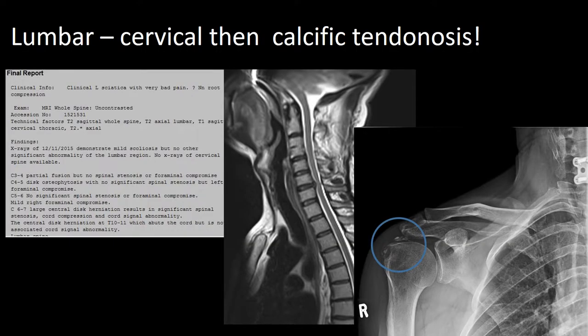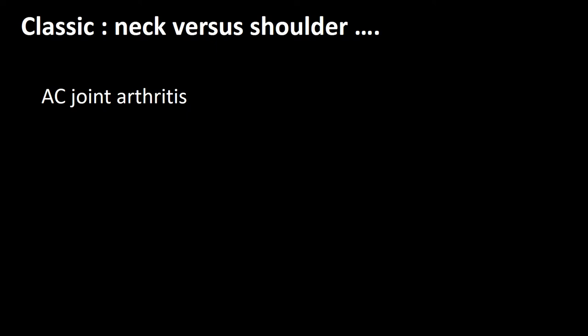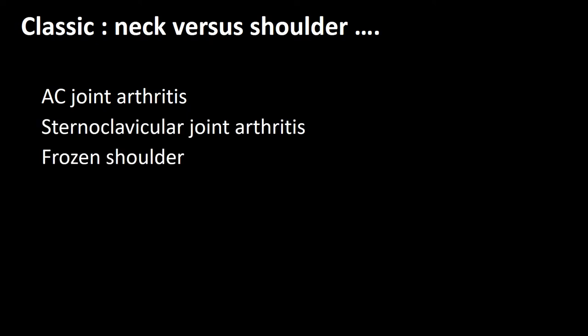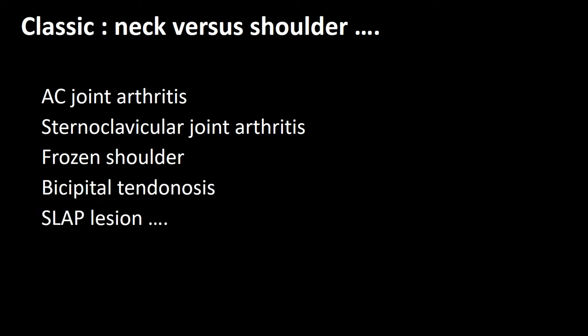This patient presented with initially lumbar pathology, then cervical, undergoing an ACDF, when all along the predominant symptoms were calcification in the rotator cuff, which can be an extremely painful pathology. Other causes of classic shoulder pain include acromioclavicular joint arthritis, sternoclavicular joint arthritis, frozen shoulder, bicipital tendinosis, and labral lesions such as SLAP lesions.